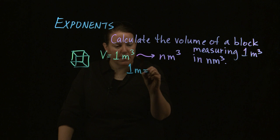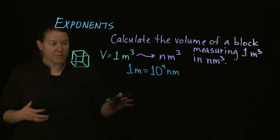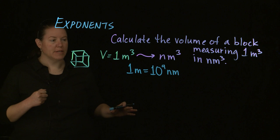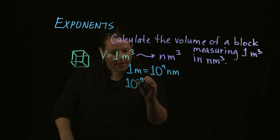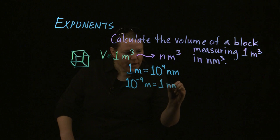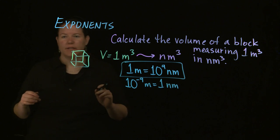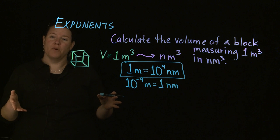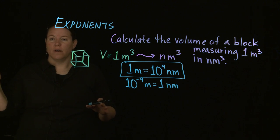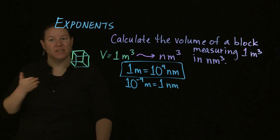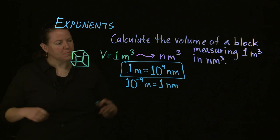We know the conversion: in every one meter there are ten to the ninth nanometers. Your book may express it as ten to the negative ninth meters equals one nanometer. I tend to use the positive expression — like there are a hundred centimeters in a meter, a thousand millimeters in a meter, a thousand meters in a kilometer — and I use that positive convention here.